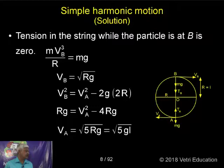Therefore, VB squared equals Rg, equals VA squared minus 4Rg. Therefore, VA is equal to root of 5Rg, that is equal to root of 5gl, because Rg equals gl.